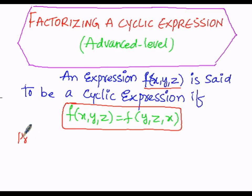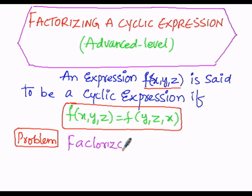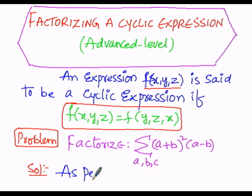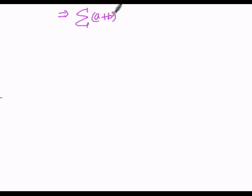Based upon this definition, we are going to perform a problem. Factorize sigma (a+b)² · (a−b), where the variables are a, b, c. The solution starts here as per the problem. The cyclic expression is sigma (a+b)² · (a−b) with variables a, b, c.